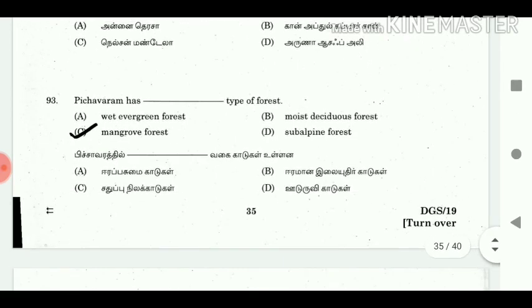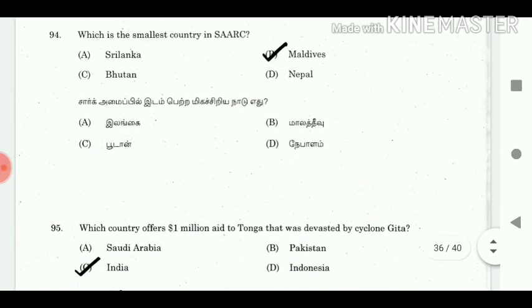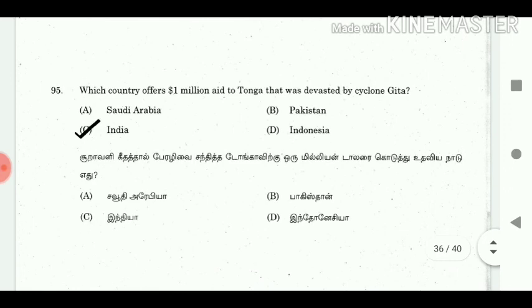93. Pichavaram has which type of forest? Answer: Mangrove forest. 94. Which is the smallest country in SAARC? Answer: Maldives. 95. Which country offered $1,008,000 to Tonga that was devastated by Cyclone Gita? Answer: India.